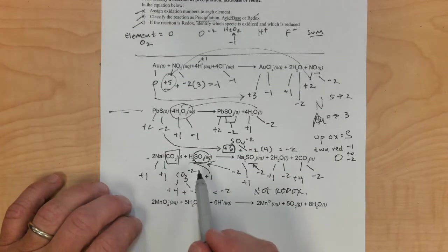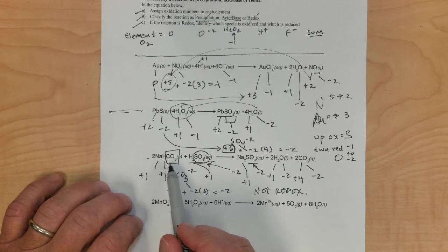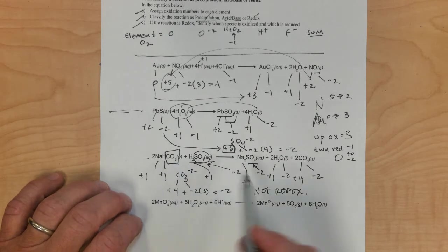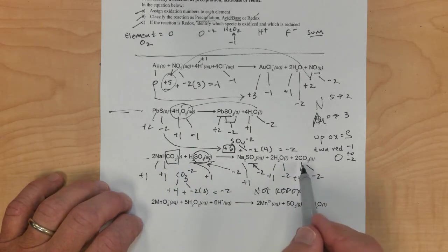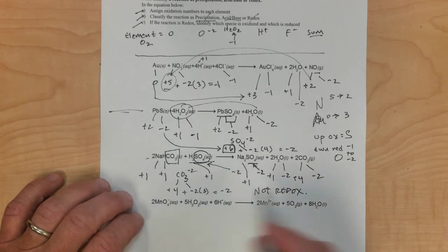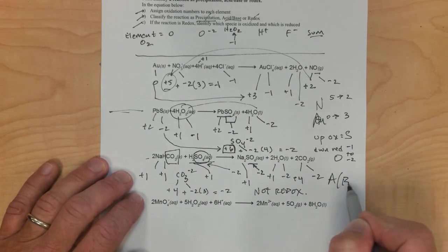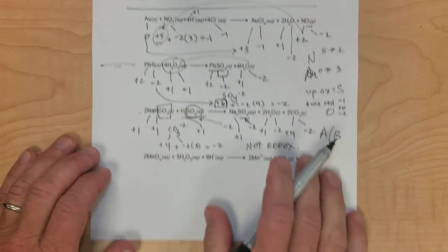Looking at it as acid-base: we have an acid, H2SO4, and then hydrogen carbonate, which can act as a base. Notice it's one of those gas-forming reactions where an acid reacts with HCO3⁻. So this is an acid-base type reaction.